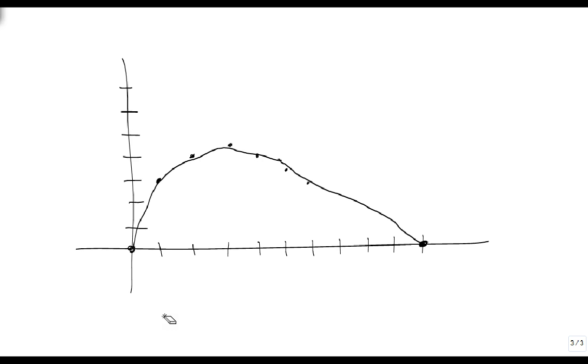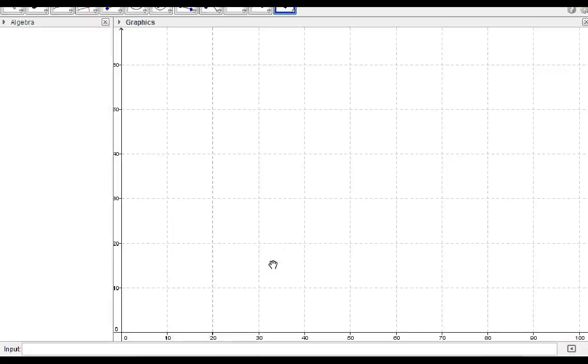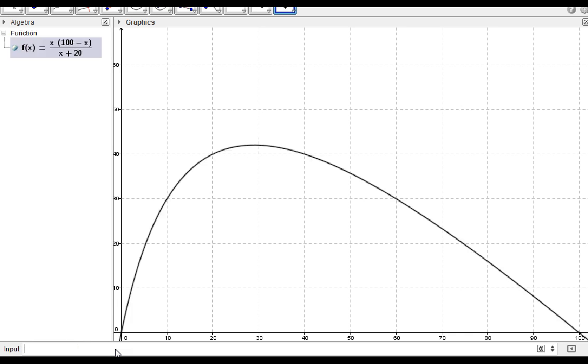If we really wanted to see it, let's open up this graphing program, and we're going to let our f(x) equal x times 100 minus x divided by x plus 20. And notice that actually got pretty close to what we were looking for. Here's our graph, and it fits really close to what we hand graphed, so we can be fairly confident that we've done our work correctly.